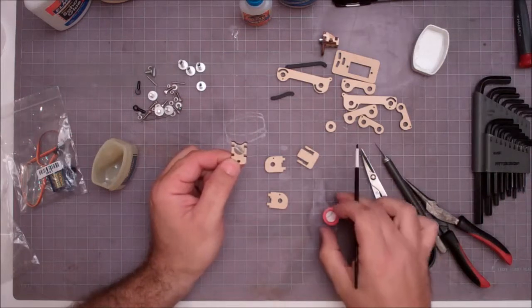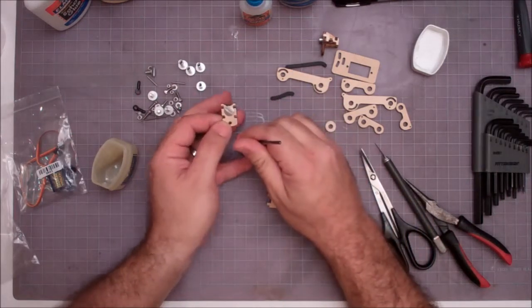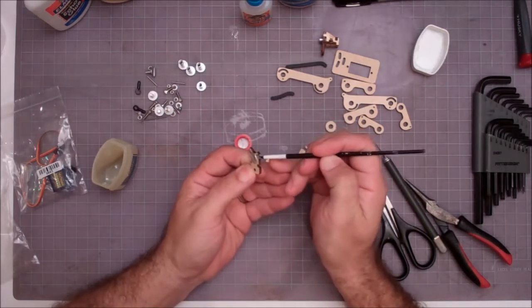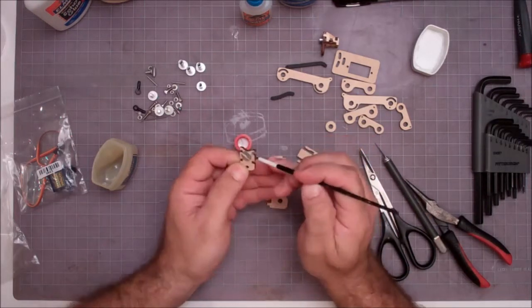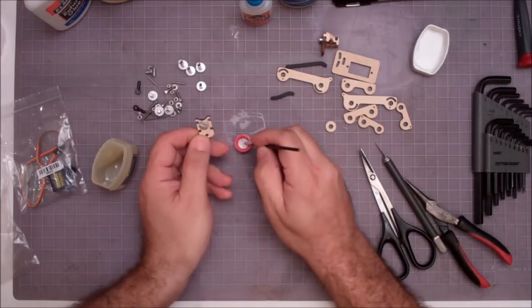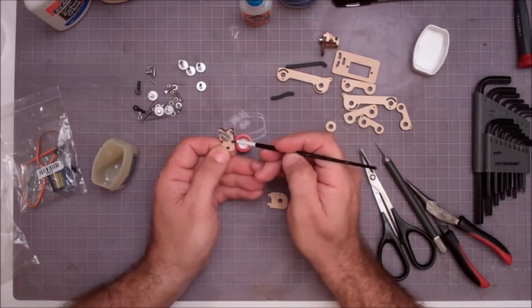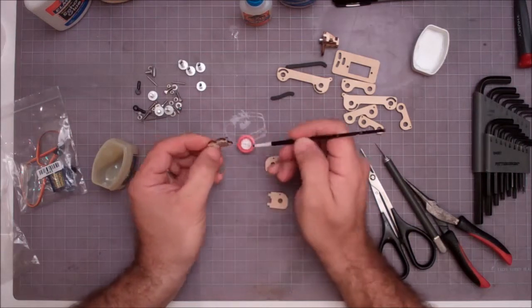So, to use the Elmer's glue, I'm just going to take a little bit here on the brush, and I'm just going to paint it inside each of these little notches here. Trying to avoid getting it on the screw, although I got a little bit on there, but since we put the Vaseline on, it won't make that big a deal.